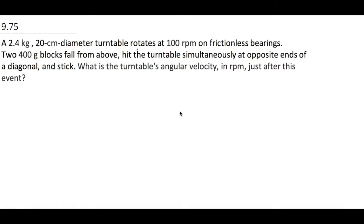A 2.4 kilogram, 20 centimeter diameter turntable rotates at 100 RPM on frictionless bearings. Two 400 gram blocks fall from above, hit the turntable simultaneously at opposite ends of a diagonal, and stick. What is the turntable's angular velocity and RPM just after this event? Let's go ahead and draw a quick picture. The radius is 20 centimeters, so 0.2 meters.